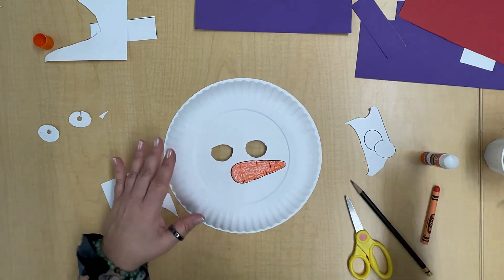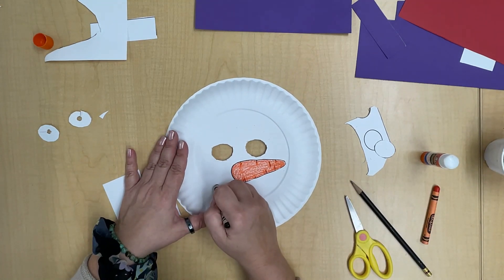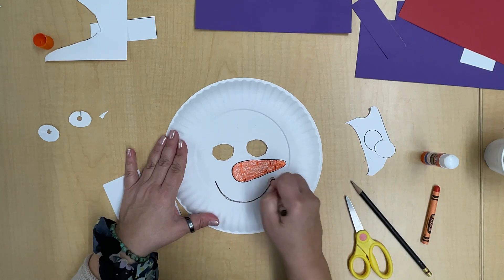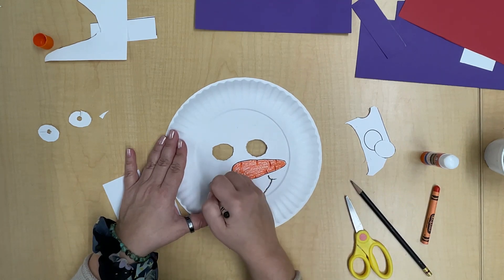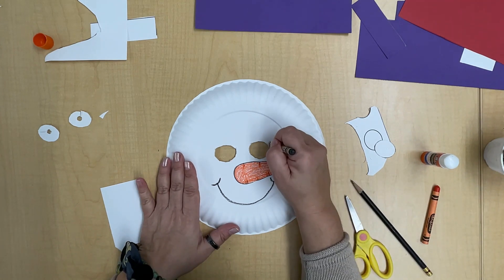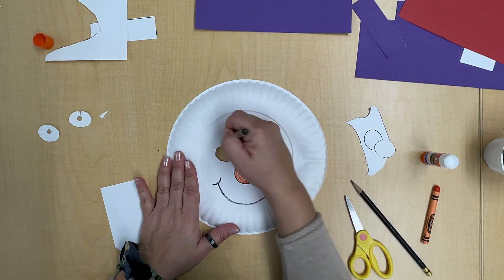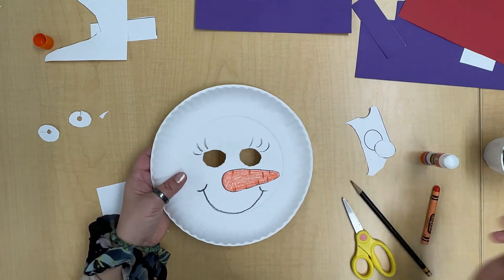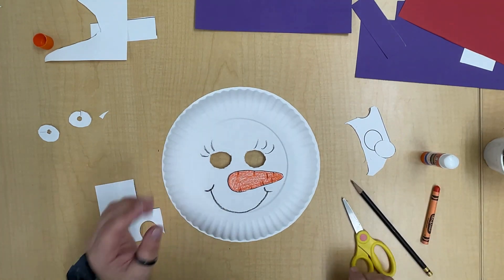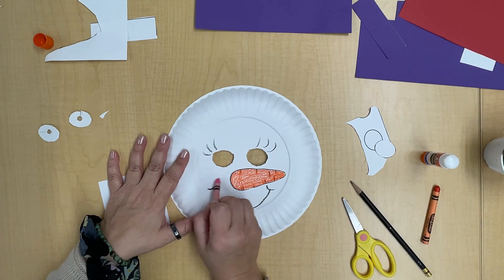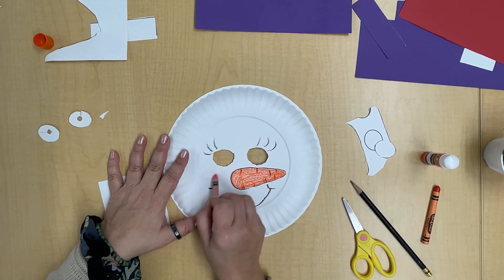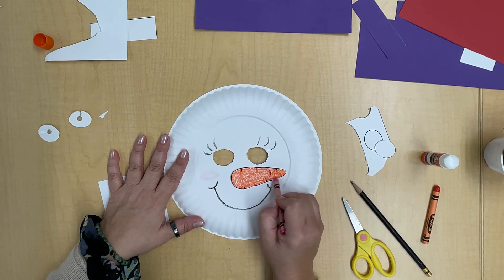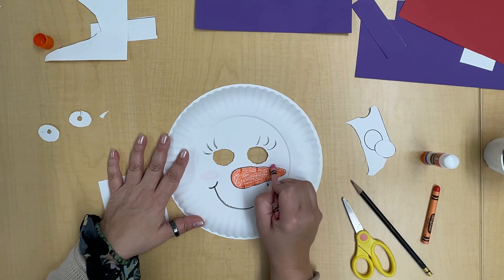Now I am going to draw just a big smile and how about some eyelashes on this snow person. Maybe some rosy cheeks. This cheek is behind the carrot nose here.